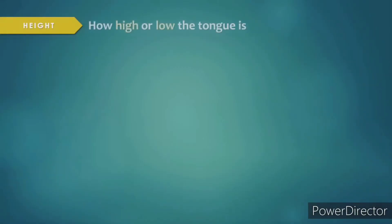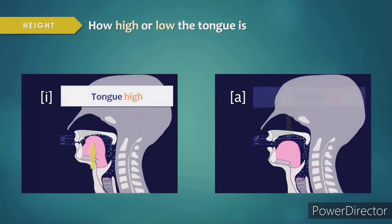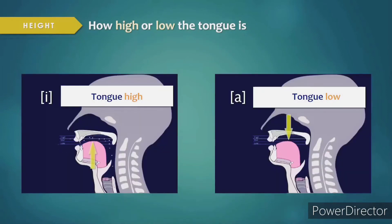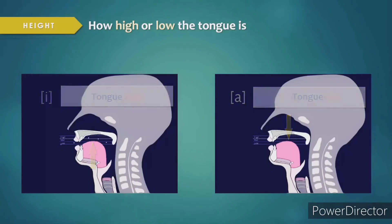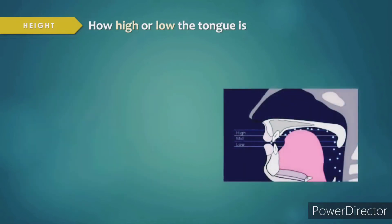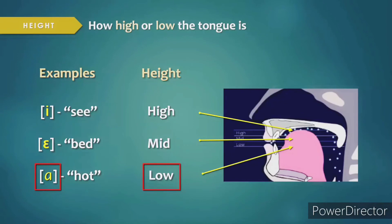Height refers to how high or low the tongue is in the mouth when producing the vowel. Consider the vowel sounds ee and ah — if you say both in succession, you should feel your tongue going up and down: ee, ah, ee, ah. In terms of height, vowels are either considered high, mid, or low. Ee is an example of a high vowel, and ah is an example of a low vowel.